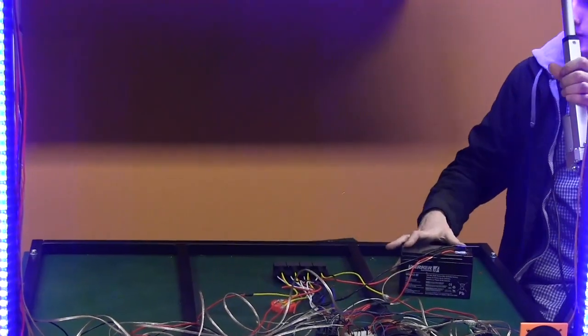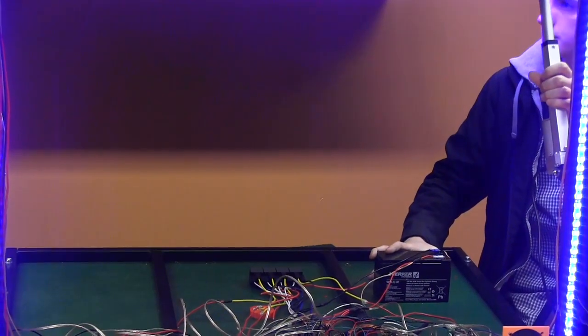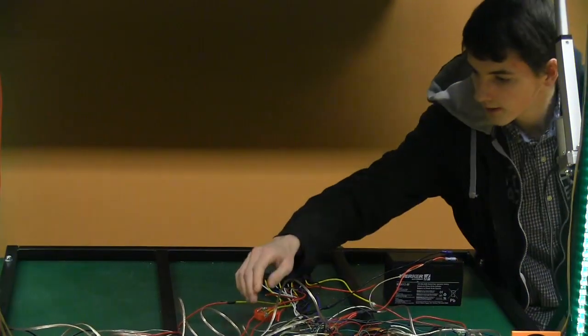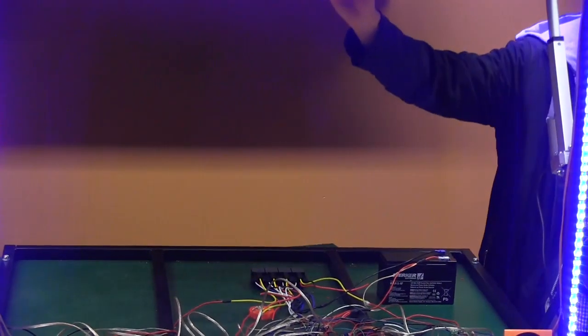And then we've got the linear actuators set up on two different H-bridges. This one right here controls the up and down movement. And this one right here controls the hopper.